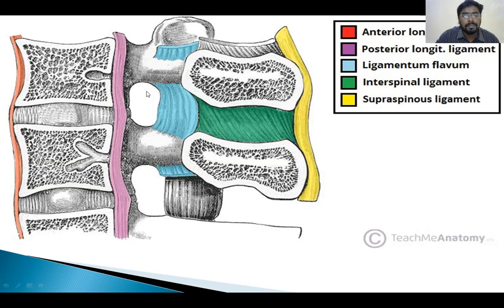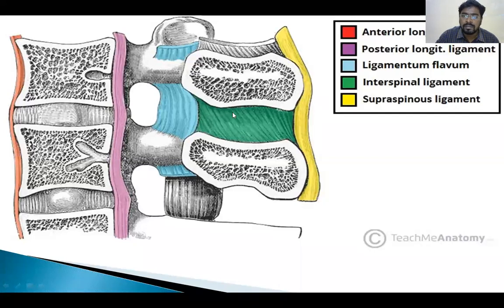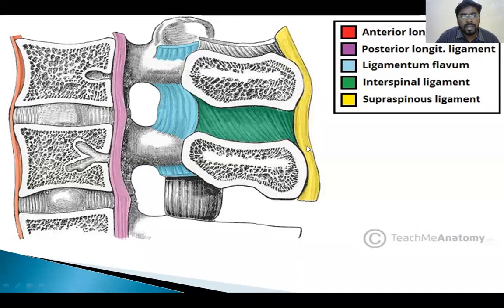This is the intervertebral foramen. This blue-colored structure is called ligamentum flavum — these ligaments connect the lamina of the upper vertebra to the lamina of the lower vertebra. These are the spinous processes. In between the spinous processes, we call these ligaments the interspinous ligaments. Coming to the posterior aspect of the spinous processes, the ligaments which connect the posterior aspect are called supraspinous ligaments. There is also the intertransverse ligament, which connects the transverse processes of successive vertebrae.